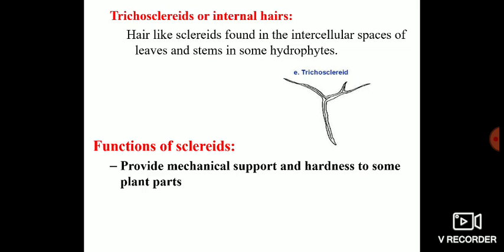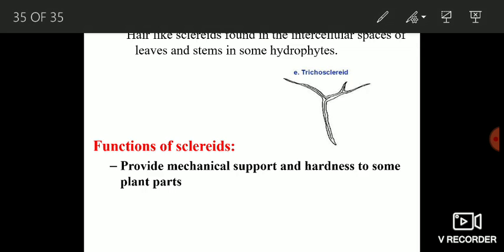In the intercellular spaces of leaves and stems. And finally the functions of sclereids. The prime function of sclereids is the mechanical support and they provide hardness to some plant parts. This is all about sclereids and in the next part we are going to discuss the complex permanent tissues. I hope you all understand this. Stay blessed and thank you all.